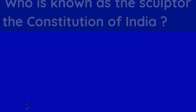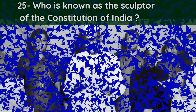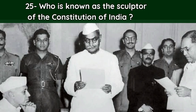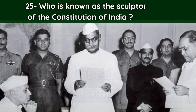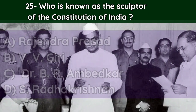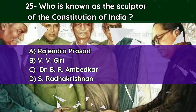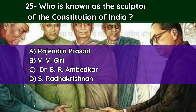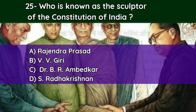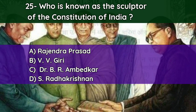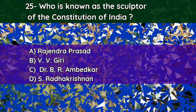Question number twenty-five: Who is known as the sculptor of the Constitution of India? A. Rajendra Prasad, B. V. V. Giri, C. Dr. B. R. Ambedkar, D. S. Radhakrishnan. And the correct answer is C — Dr. B. R. Ambedkar.